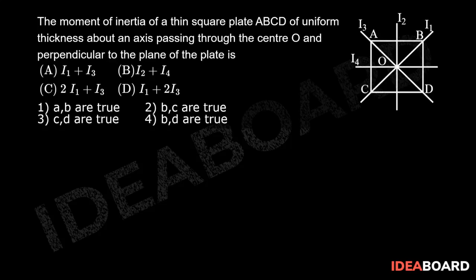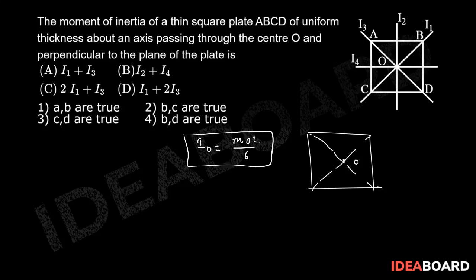In this question we have been provided information about the different axes and their moment of inertia. The actual task is to calculate moment of inertia of this square sheet from the axis passing through point O. We know that IO is equal to M times A squared by 6.